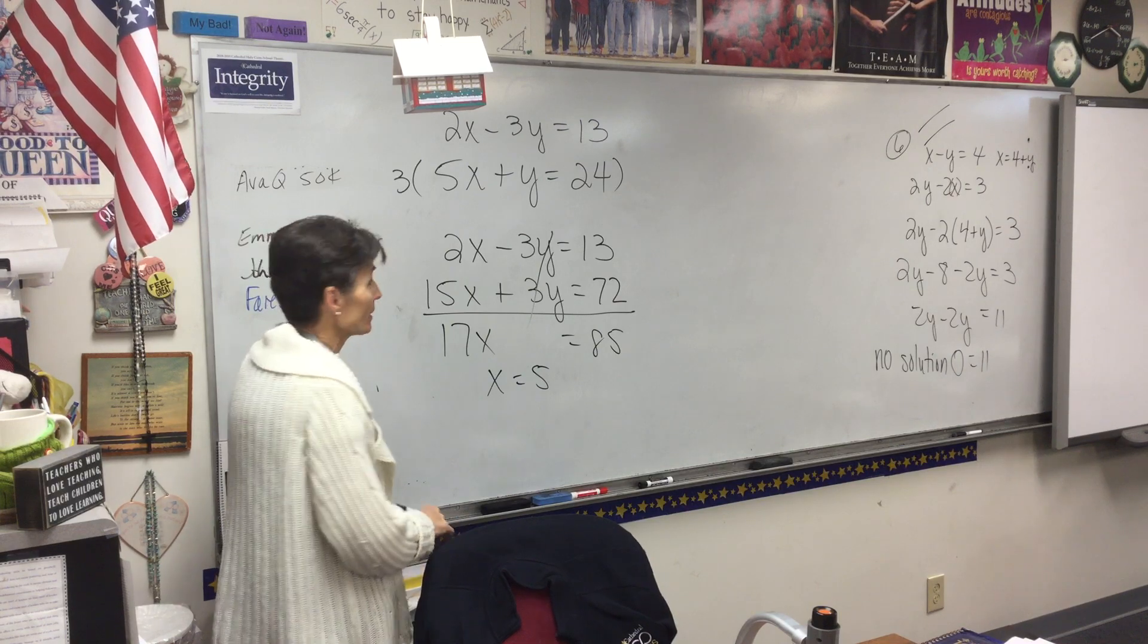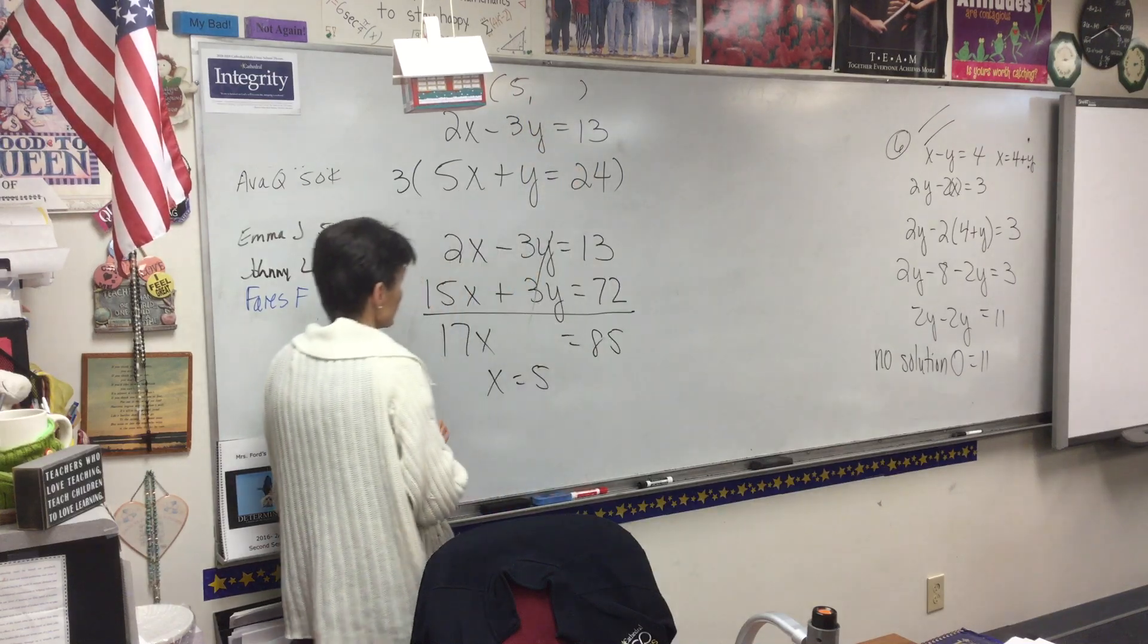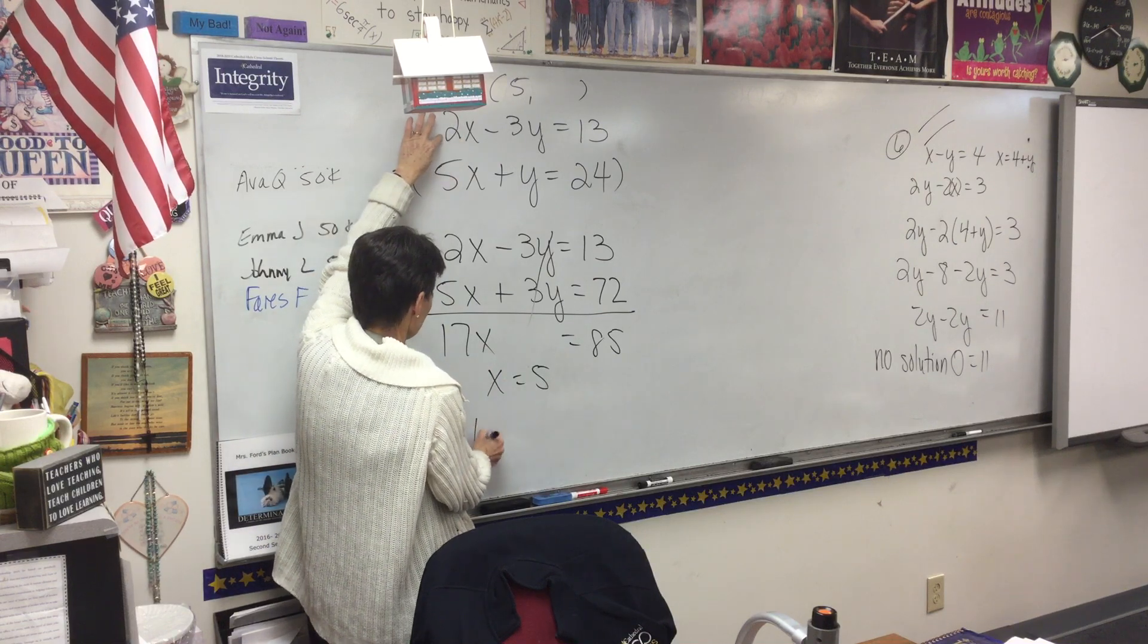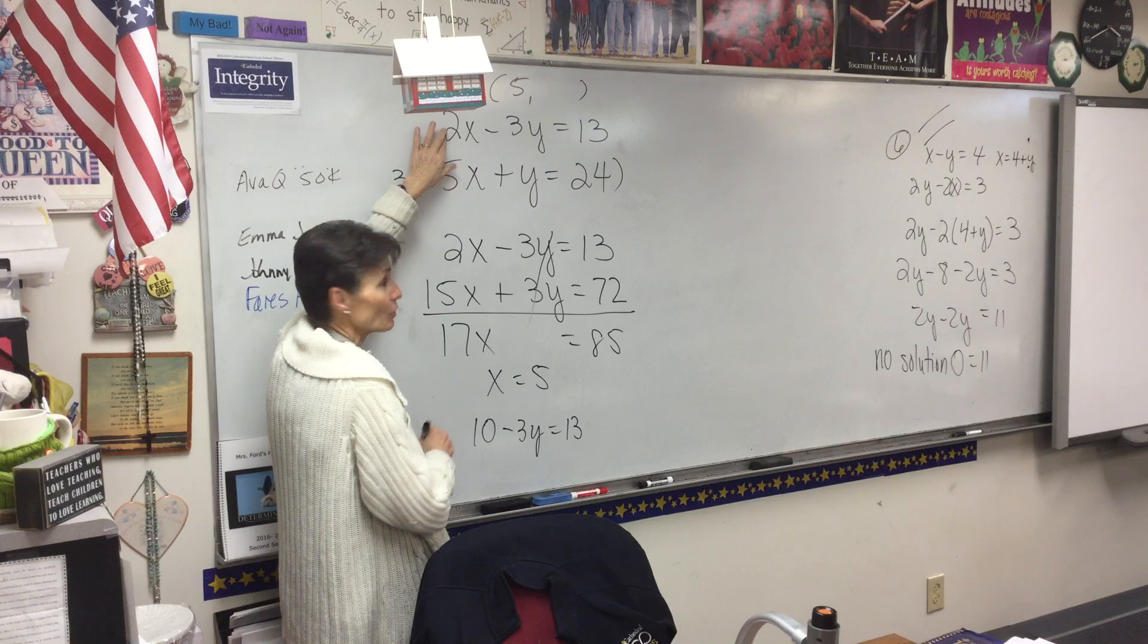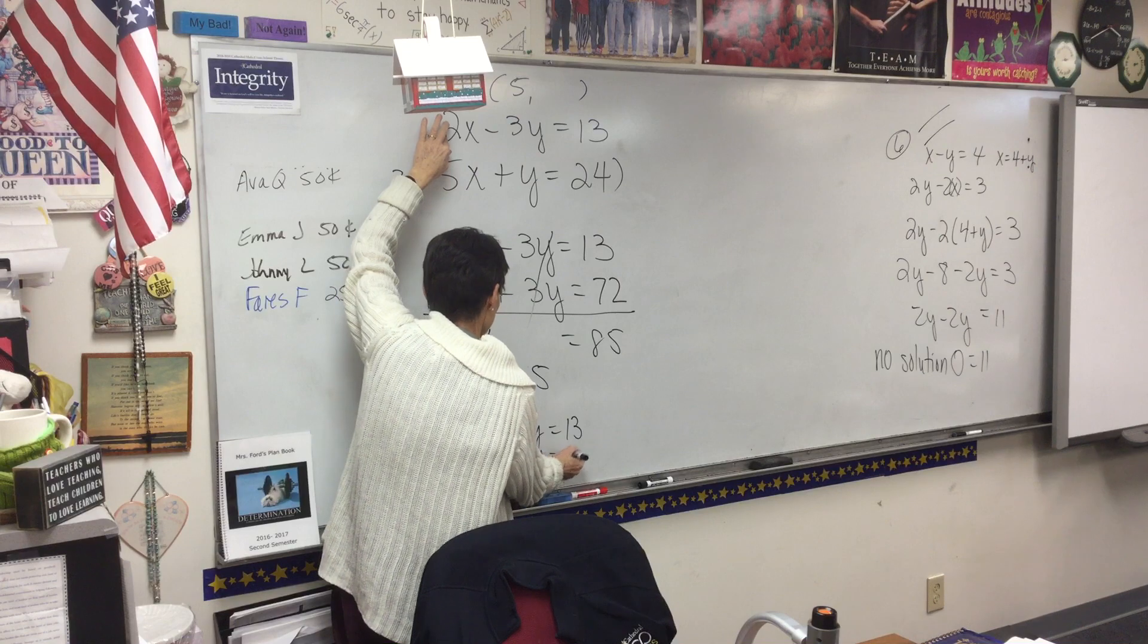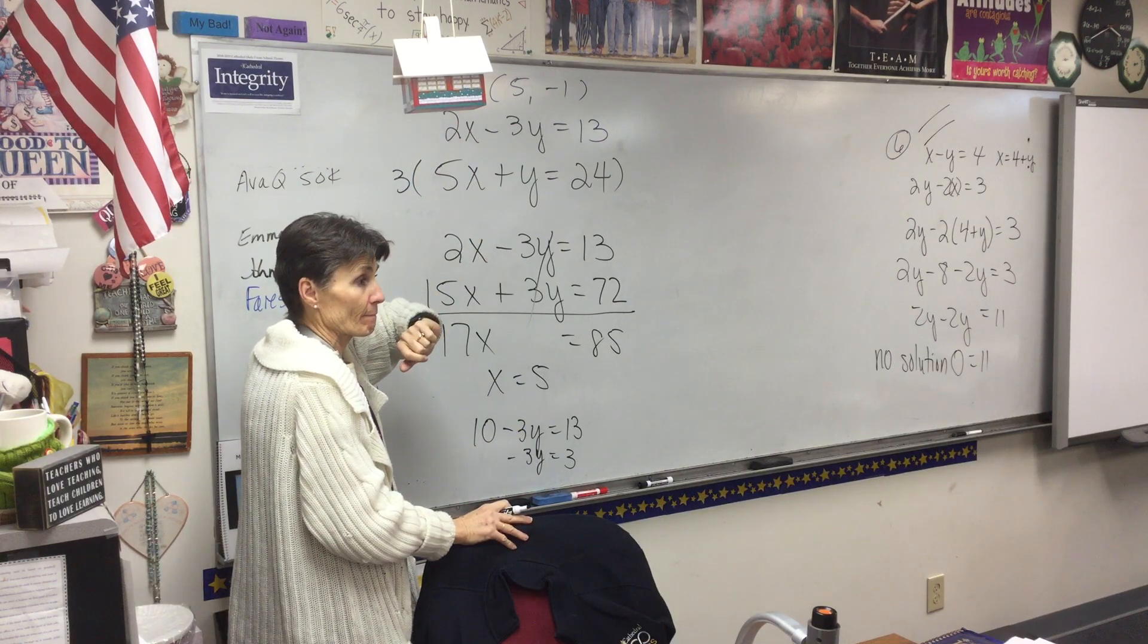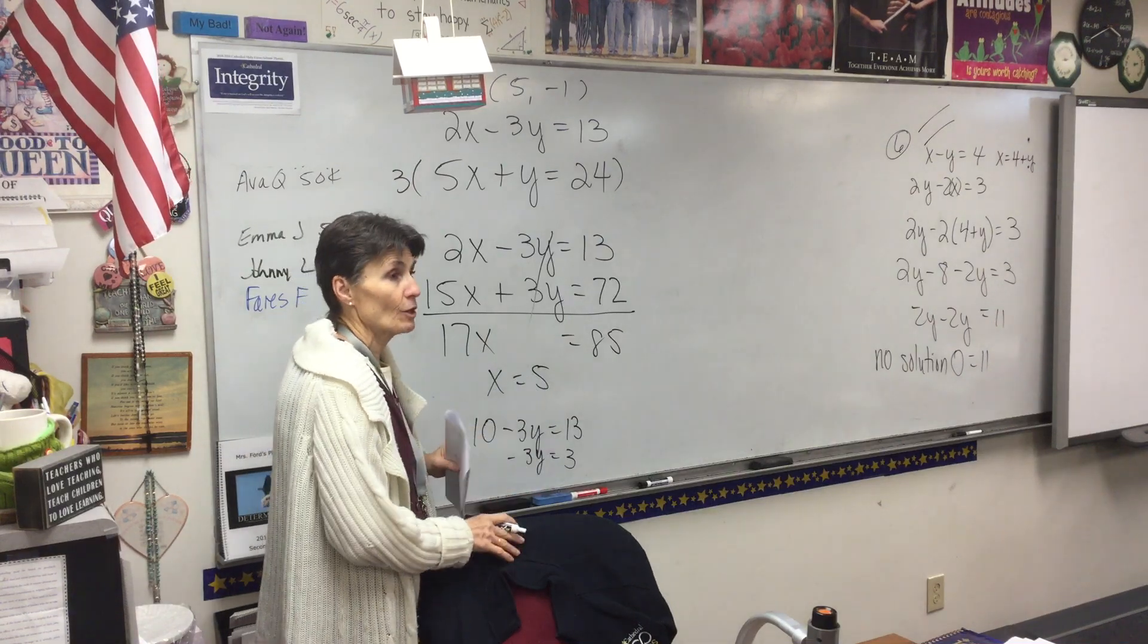But we're not done. We've got to plug it back in. Because, again, we're looking for the point of intersection. So we know x is 5, so I don't care which equation you use. If I use the top one, I put in 5, it says 10 minus 3y equals 13. You can put it in either equation. It doesn't matter. So negative 3y equals 3, and I guess y equals negative 1.